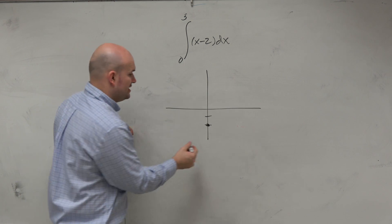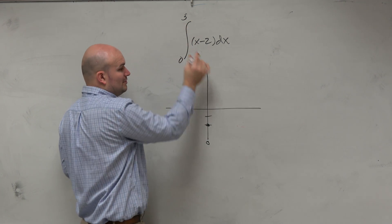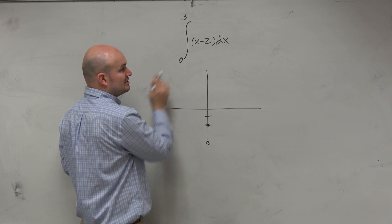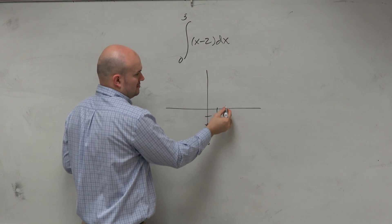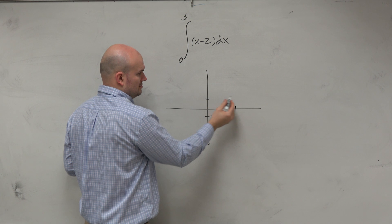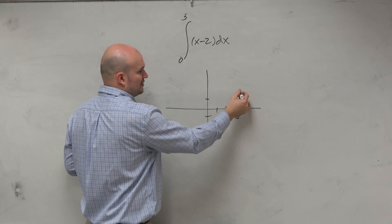And we want to evaluate it from 0 to 3. Now, if we want to figure out where this graph is at 3, we could easily just plug in 3, right? Would you guys agree? 3, and we see that at 3, we're at the point 3 comma 1.